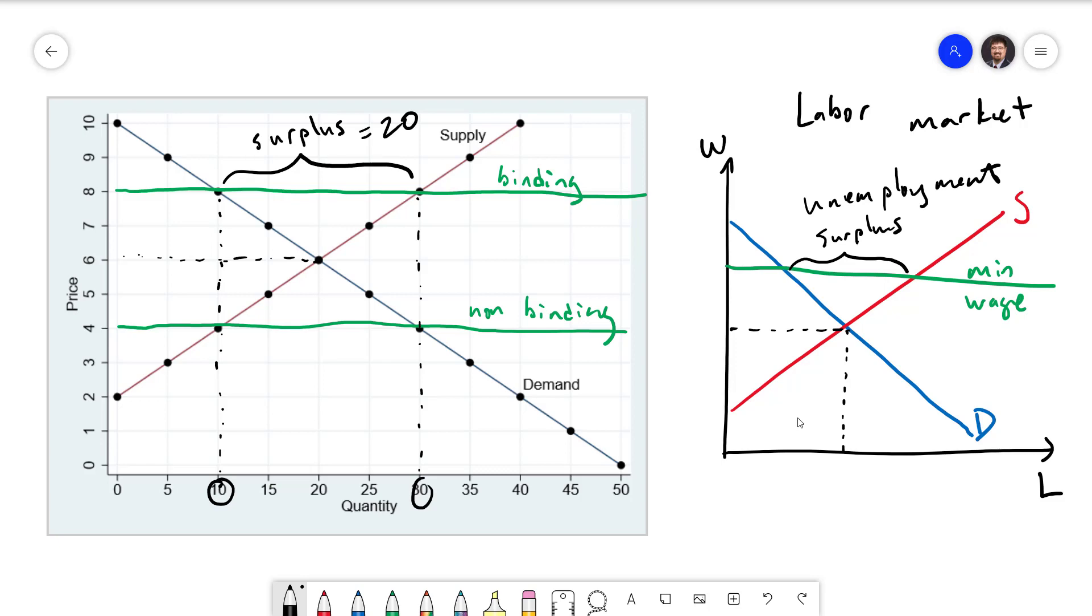It's worth mentioning here that while economists tend to oppose most forms of price controls like rent control, the minimum wage is a little bit more mixed in terms of opinion. This has been the basics of price controls, both ceilings and floors. In the next video, we will turn to taxes.